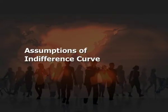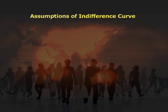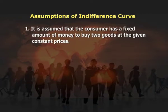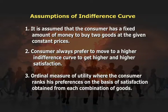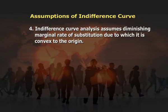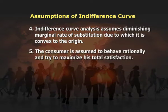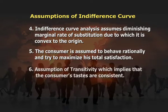Let us discuss certain assumptions of indifference curve analysis. First, it is assumed that the consumer has a fixed amount of money to buy two goods at a given constant price. Second, the consumer always prefers to move to a higher indifference curve to get higher satisfaction. Third, ordinal measure of utility — the consumer ranks preferences based on satisfaction from each combination of goods. Fourth, indifference curve analysis assumes diminishing marginal rate of substitution, due to which the curve is convex to the origin. Fifth, the consumer is assumed to behave rationally and tries to maximize total satisfaction. Sixth, the assumption of transitivity implies that the consumer's tastes are consistent.